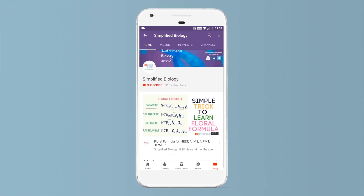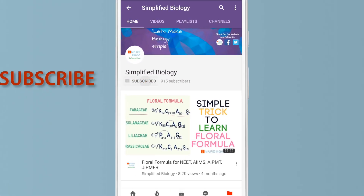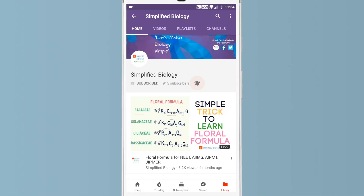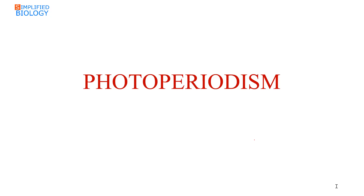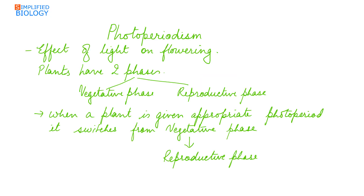Welcome to Simplified Biology. Today's topic is photoperiodism. Photoperiodism is the effect of light on flowering plants.